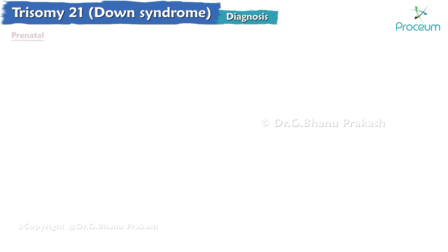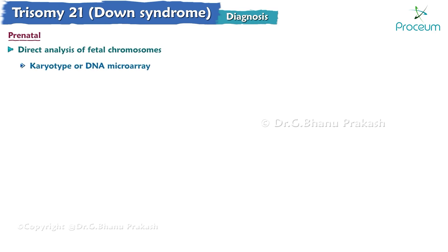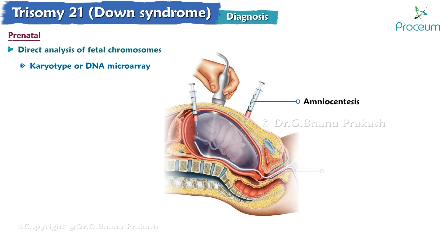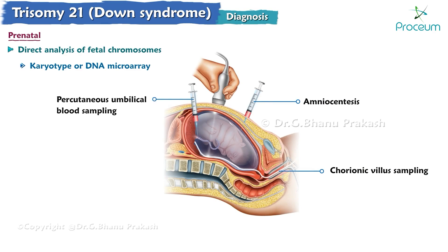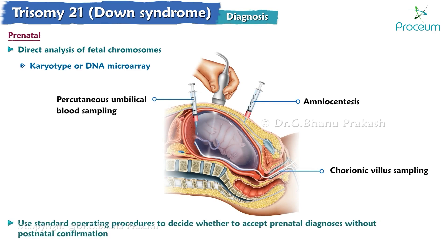Regarding diagnosis — prenatal: Trisomy 21 may be diagnosed through direct analysis of fetal chromosomes via karyotype or DNA microarray, obtained from amniocentesis, chorionic villus sampling, or percutaneous umbilical blood sampling. Standard operating procedures are used to decide whether to accept prenatal diagnoses without postnatal confirmation, for example in cases of termination of pregnancy or unexamined fetal death.